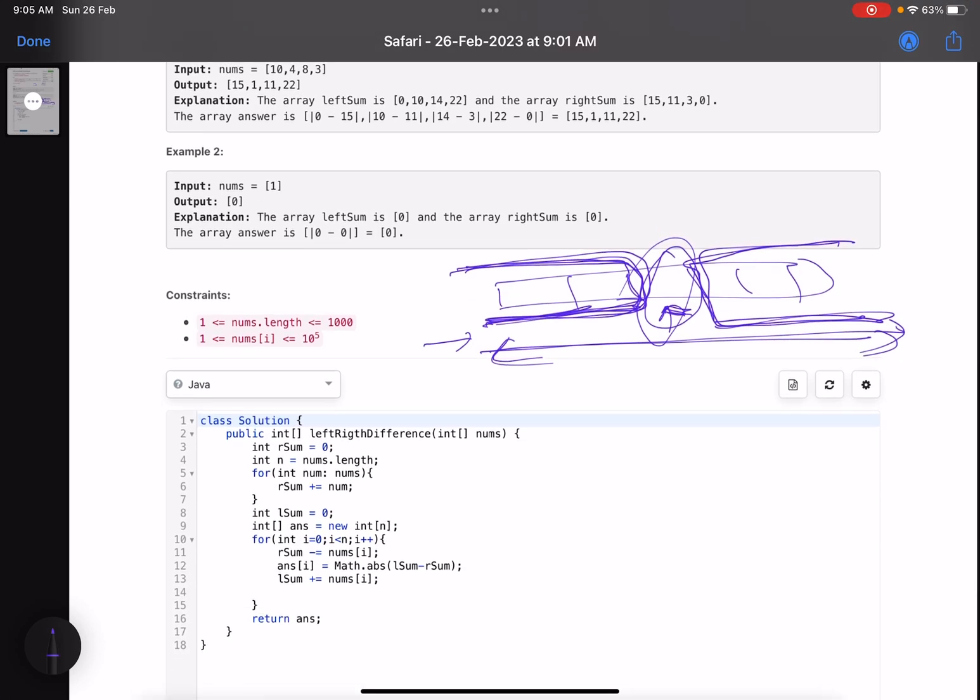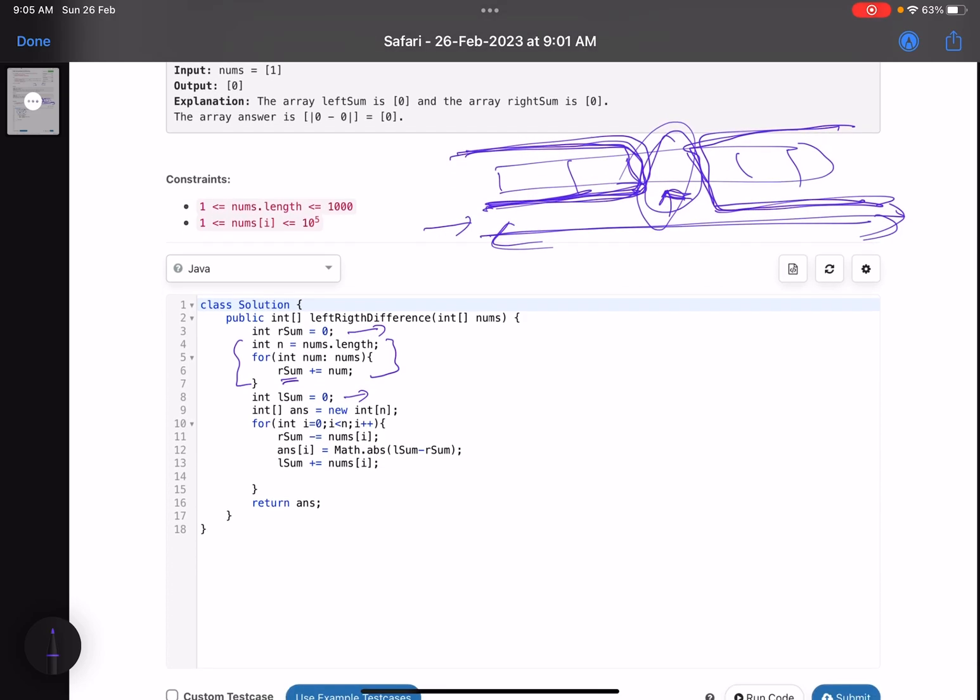So just see what I've done here. I've taken a variable rSum, which is initialized by zero. And here what I've done, I've found out the sum of all the elements that is present in the rSum only. rSum means right sum. I've taken an extra variable lSum here to basically keep a track of the sum of left hand elements. And then this is the answer array.